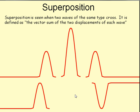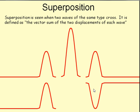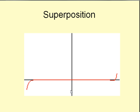Likewise, if we have two pulses that are offset, they tend to cancel each other out. For a brief period of time when they overlap, there will be essentially no amplitude, even though there is still energy in the two respective waves.